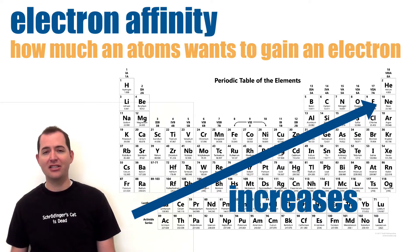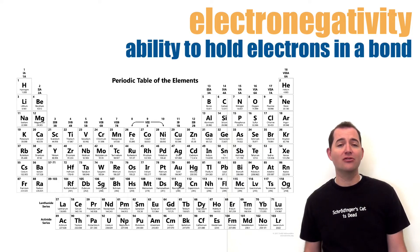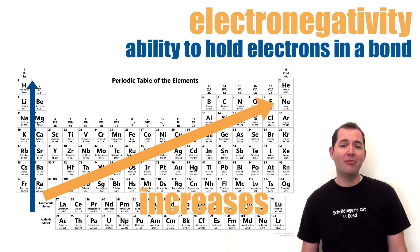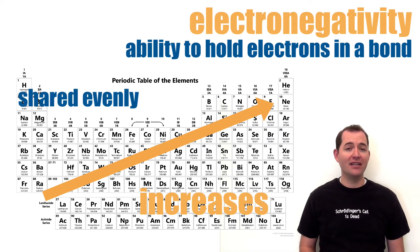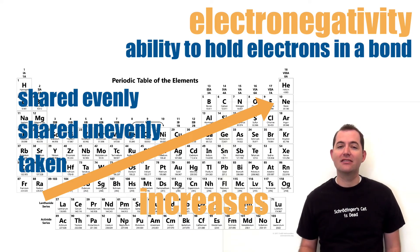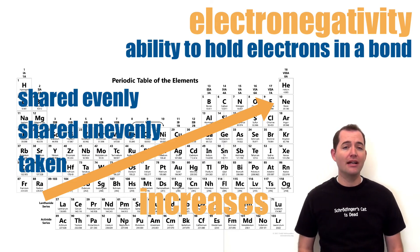The variations in electron affinity and ionization energy trends happen for the same reasons. Finally, electronegativity is the ability of an atom to hold on to electrons in a chemical bond — both ionic and covalent bonds. Electronegativity increases as we move up and to the right on the periodic table. In a chemical bond, electrons can be shared evenly, unevenly, or entirely taken by one element. These differences are caused by the pulling strength of the atoms involved, and electrons in a bond will be pulled closer to the atom with the greater electronegativity.